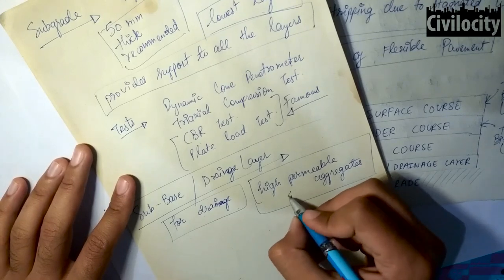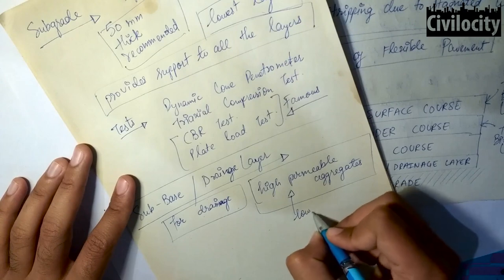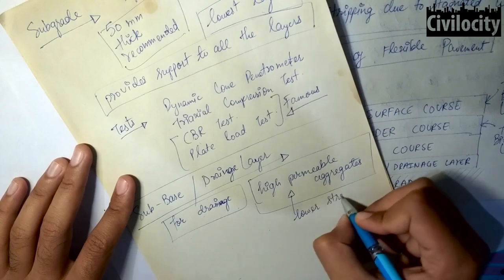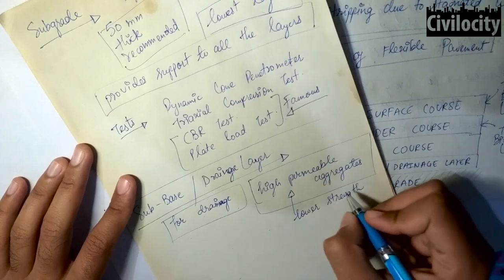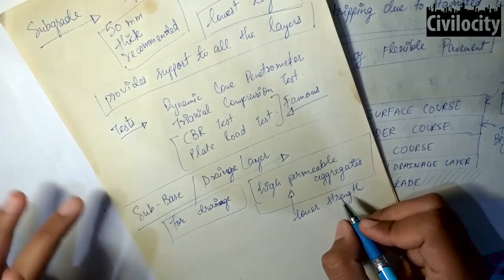This layer is constructed because if water enters through the shoulders or through the pavement surface, it should be drained off immediately without causing deterioration of the pavement.